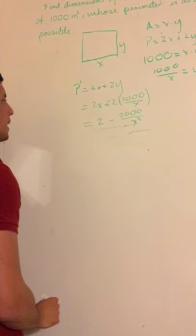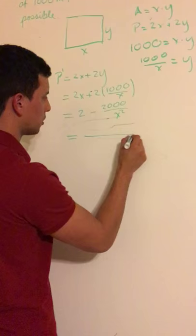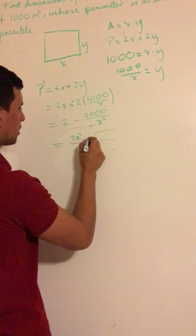Here we are just going to find the common denominator which is x squared. We have 2x squared minus 2000.